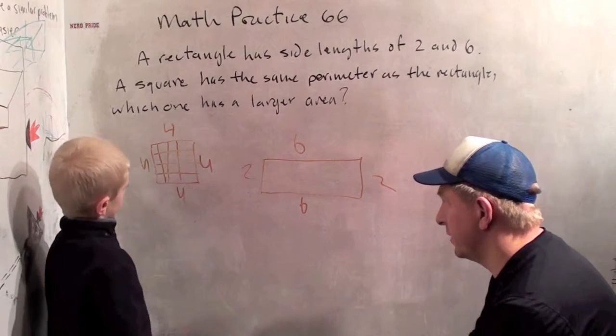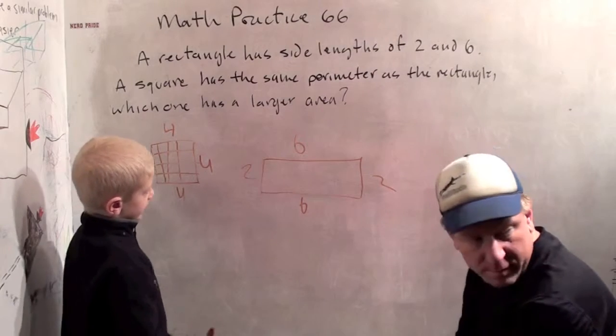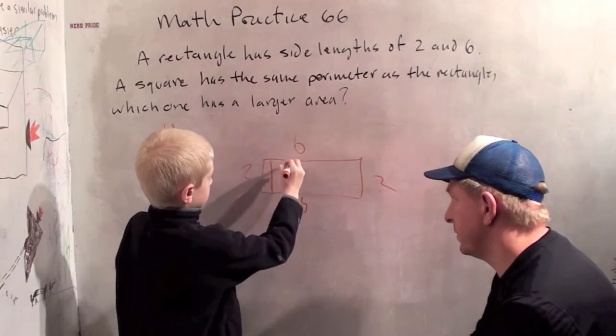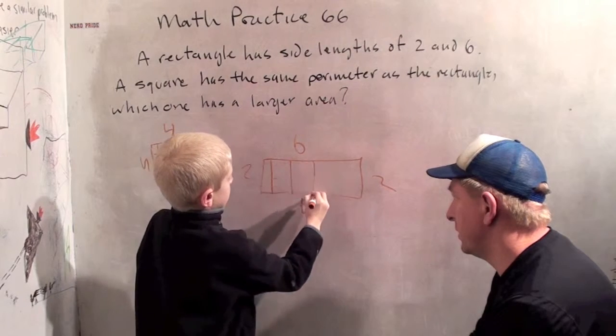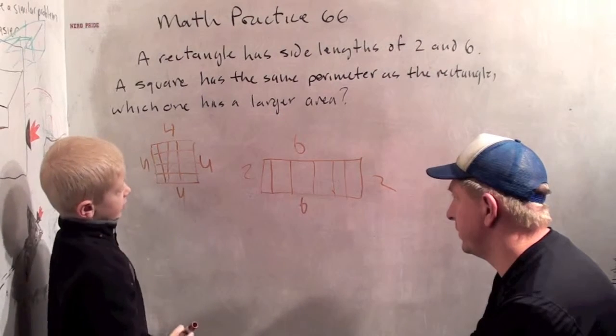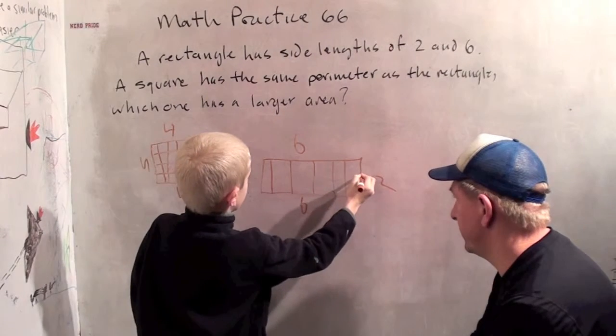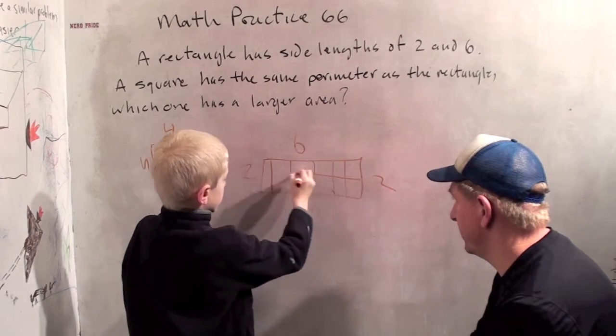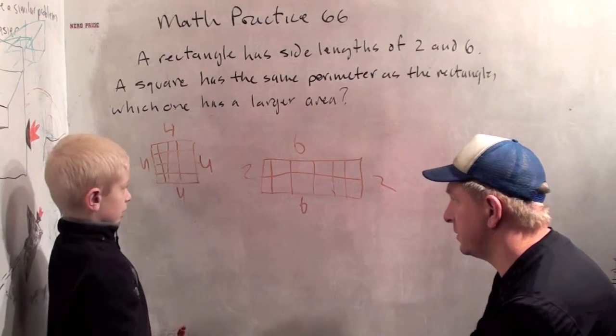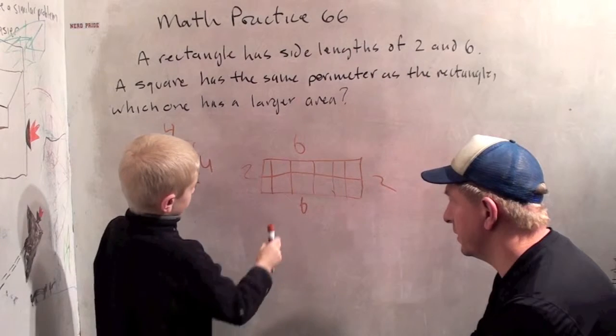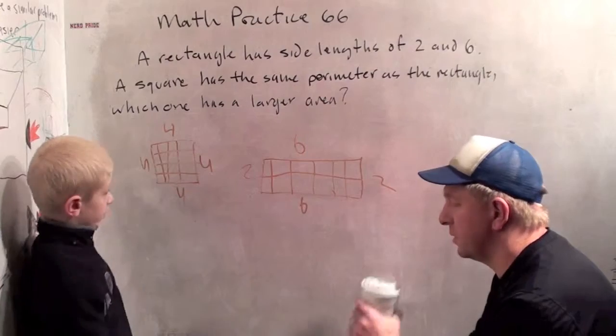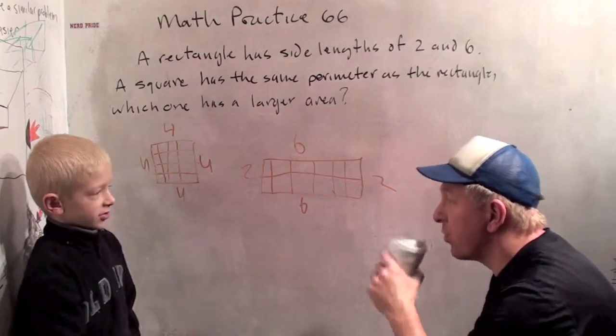Now we have to have 6 squares on this side. 2, 3, 4, and 5. And now we have to have 2 squares on this side. So the area of this is 12. So this one has a larger area.